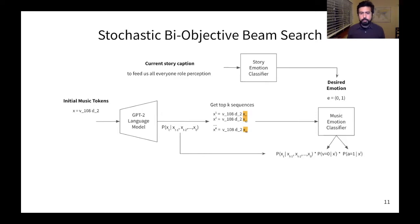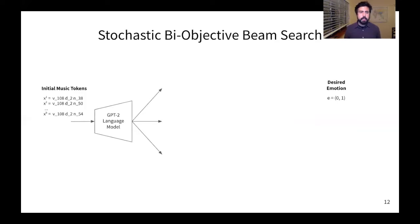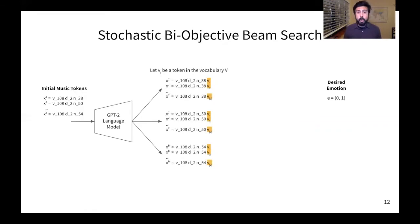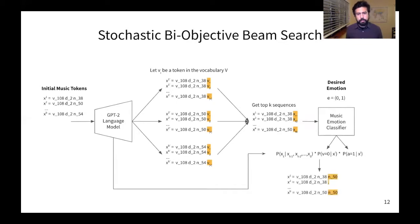And the resulting distribution is used to sample our beam of size B. In the second iteration of the beam search, we start with B sequences and each sequence has three tokens. It's important to highlight that the emotion hasn't changed because we are still composing for the same piece of speech. So, we feed all these B sequences into the language model. And now what we do is we concatenate for each branch of the beam all the possible V events in our vocabulary of musical events. Then, out of all these possible sequences, we select the top K sequences. And we feed those into the music emotion classifier. And again, we get the probability distribution of valence equals to one, the probability distribution of arousal equals to one. We combine those two with the probability distribution of the language model. And the resulting distribution is used to sample the next beam.